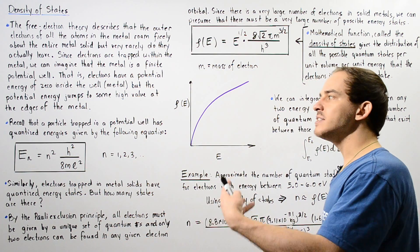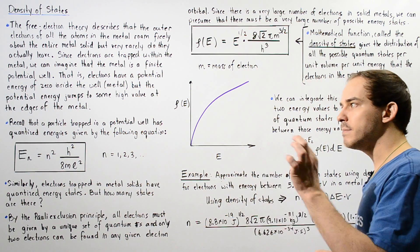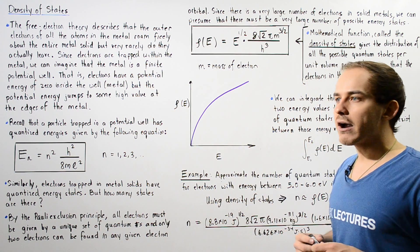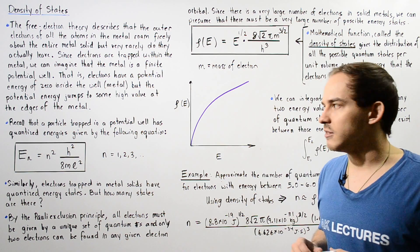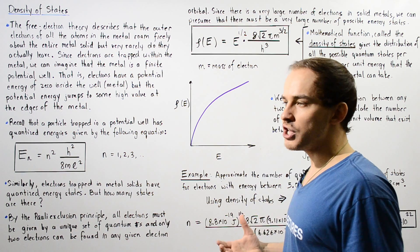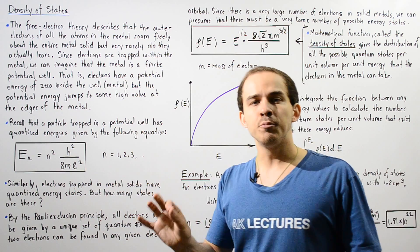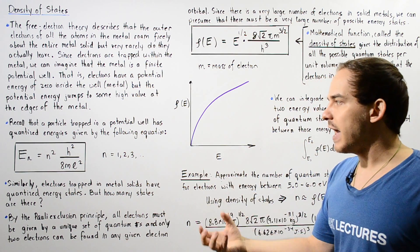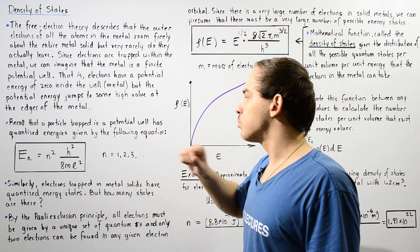Of course, quantum tunneling can take place and those electrons can actually escape into the atmosphere. Recall from our discussion on rigid boxes and infinite potential wells that a particle such as an electron trapped inside a potential well has quantized amounts of energy given by a specific equation, where the energy depends on the principal quantum number N.